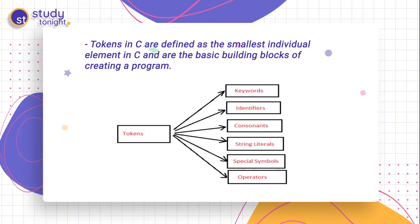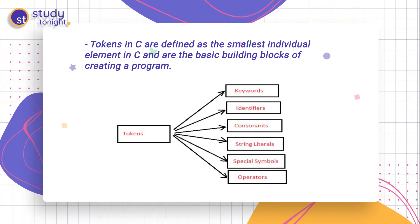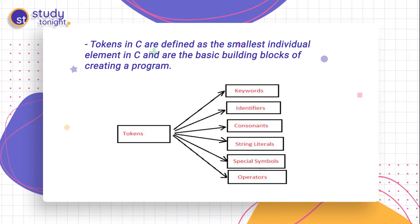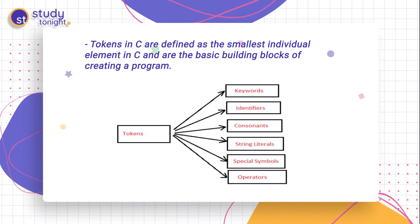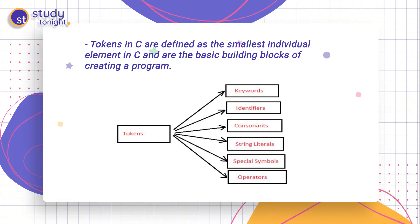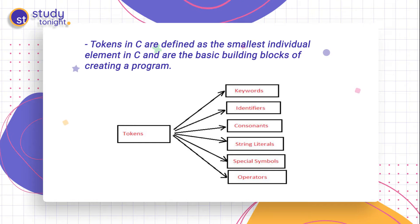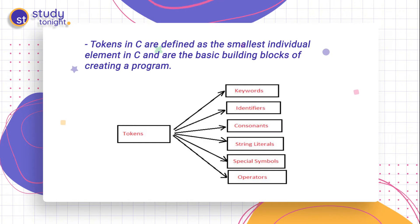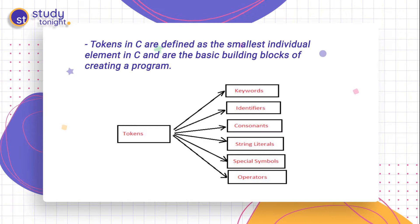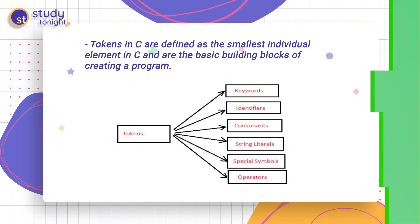Tokens are also classified into the following categories: keywords, identifiers, constants, string literals, special symbols, and operators. So in this tutorial, we will learn about keywords and identifiers.